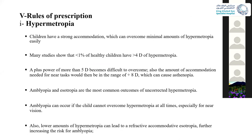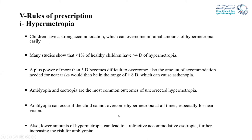Some rules for prescription for every refractive error: hypermetropic children have a strong accommodation and can overcome a minimal amount of hypermetropia. Many studies show less than 1% of healthy children have hypermetropia more than four diopters. Plus five diopters becomes difficult to overcome — the patient needs to accommodate for near vision, which can cause asthenopia. Amblyopia and esotropia are outcomes of uncorrected hypermetropia. Amblyopia occurs when the patient cannot overcome hypermetropia all the time, especially for near vision. A low amount of hypermetropia can cause refractive accommodative esotropia.